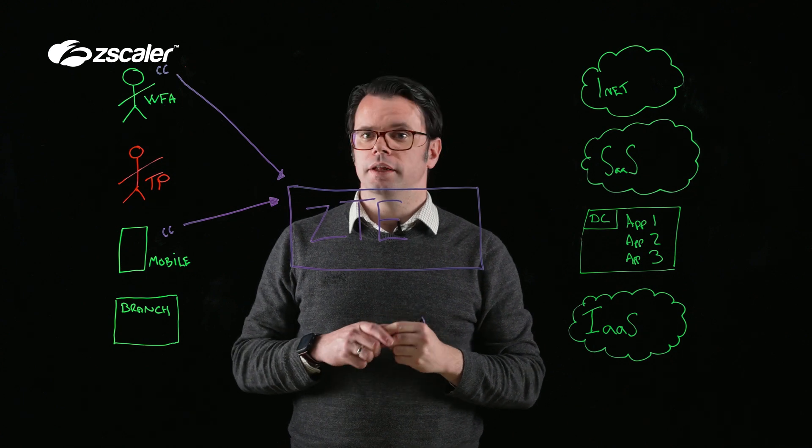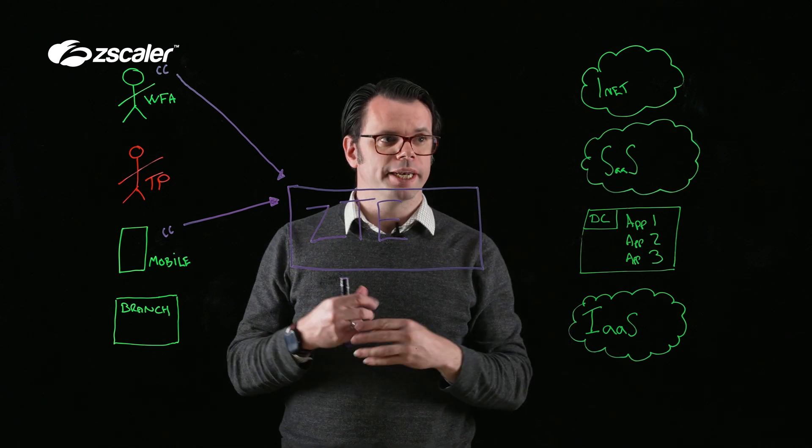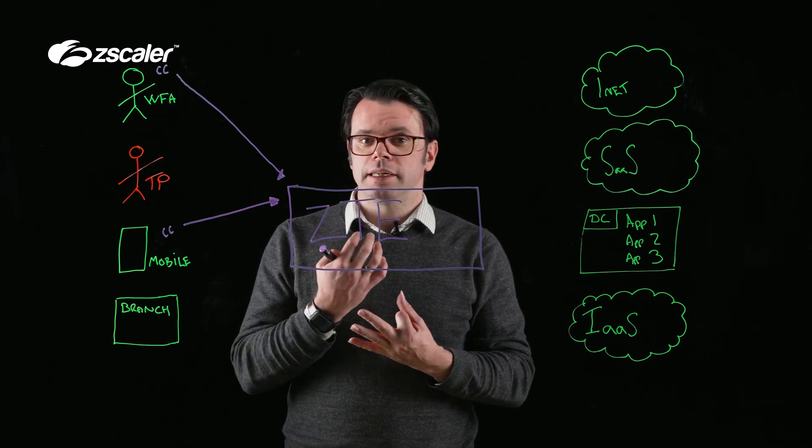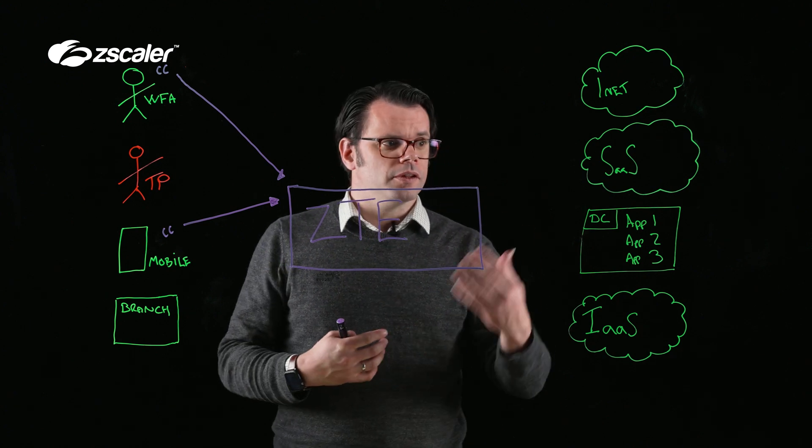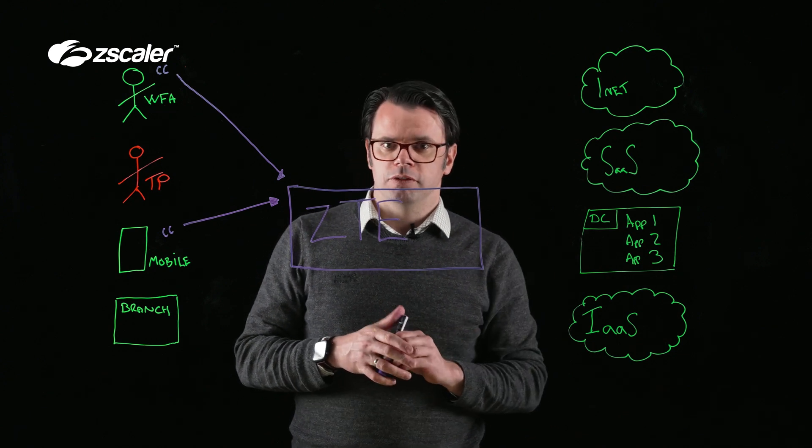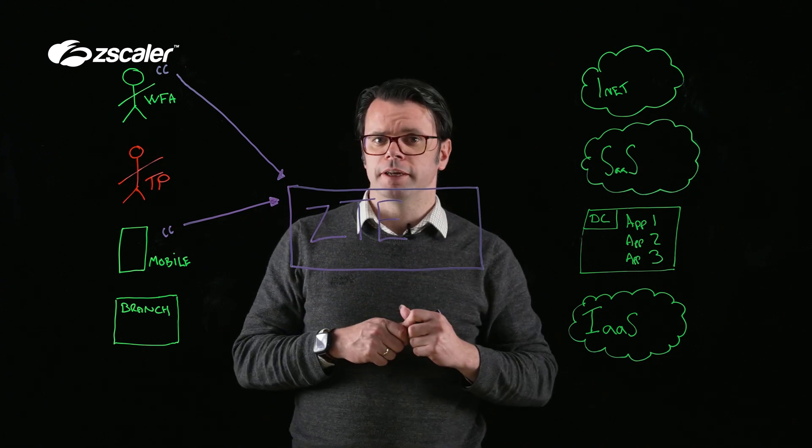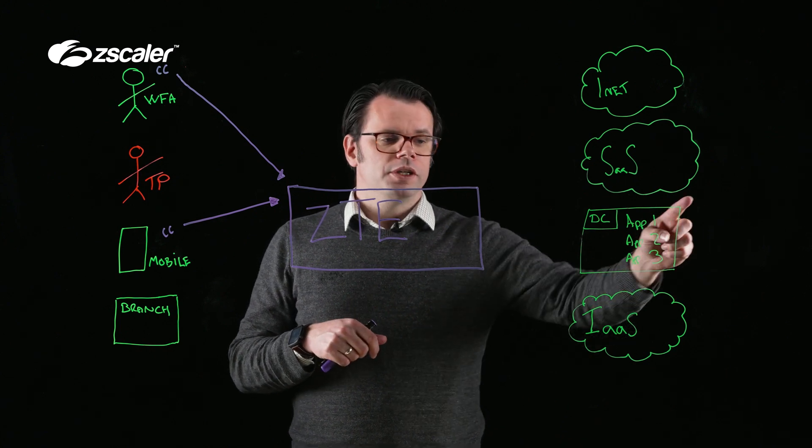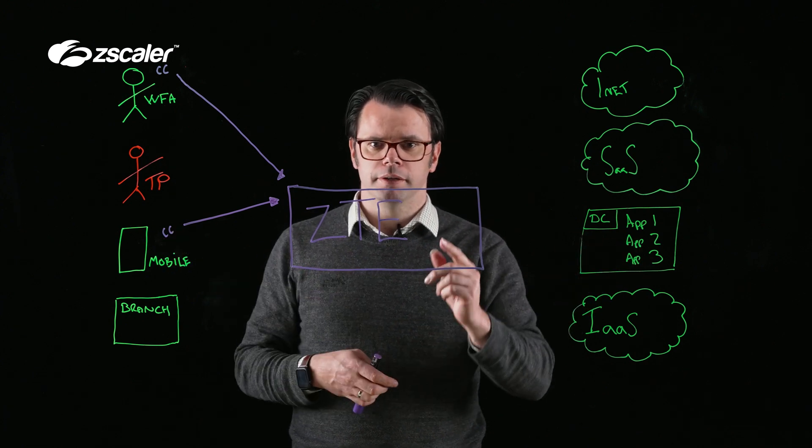So any traffic that is destined for the internet, first thing we're going to do is SSL inspection. The reason we're going to do that is it's going to allow us to then apply other controls. We're going to be able to do sandboxing, layer 7 firewall. We're going to be able to apply data loss prevention controls. We're going to be able to use our cloud application control suite so that you could allow users to access Gmail, for example, but block them from sending attachments or sending mail. So there's a raft of capabilities that SSL inspection unlocks. And unlike the way that traditional providers would have done this historically, we don't chain these one after the other. We're doing everything at the same time while it's in memory within the ZTE - single scan, multi-action.